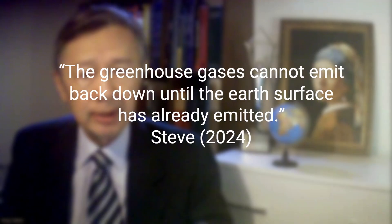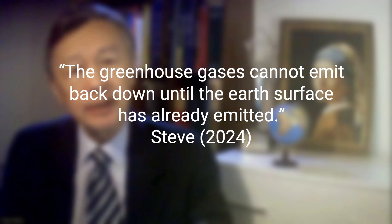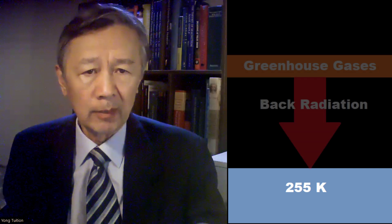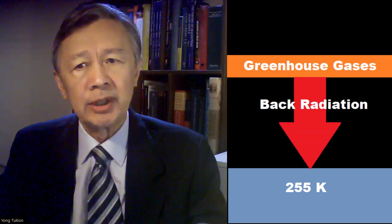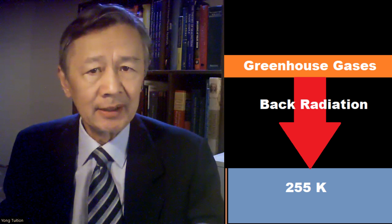Today I'm going to expose another incurable defect in Trenberth's energy flow diagram called the perpetual energy circulation. I'm delighted by a comment from viewer Steve, who wrote: the greenhouse gases cannot emit back down until Earth's surface has already emitted.